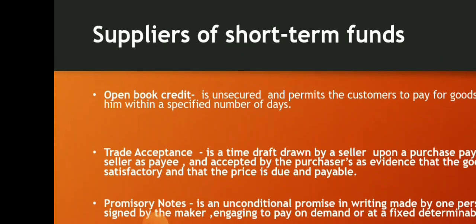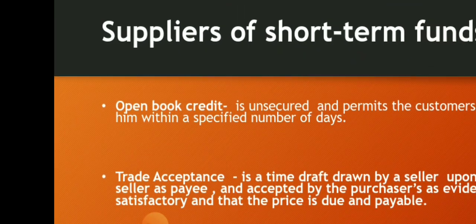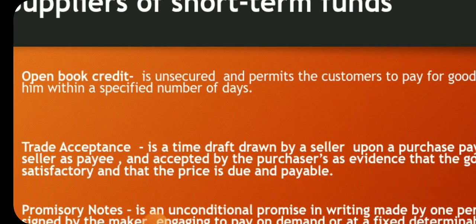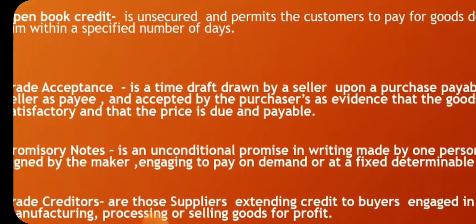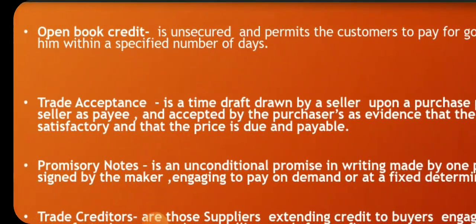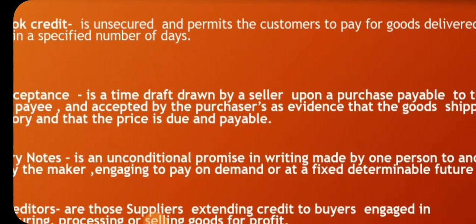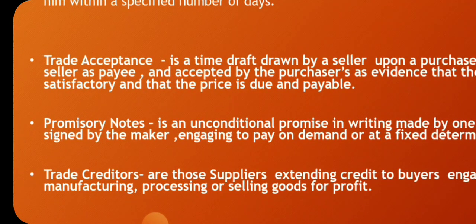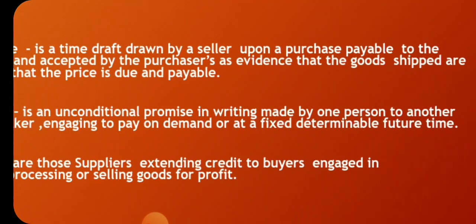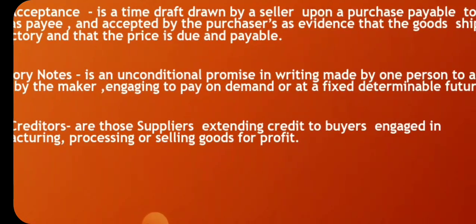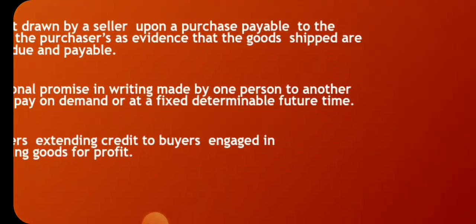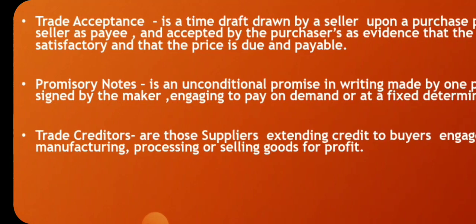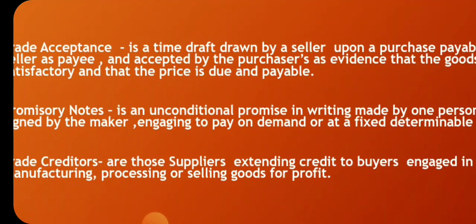Open book credit is an unsecured arrangement that permits customers to pay for goods delivered within a specified number of days. Trade acceptance is a time draft drawn by the seller upon the purchaser, payable to the seller, and accepted by the purchaser as evidence that the goods shipped are satisfactory and that the price is due and payable. Promissory note is an unconditional promise in writing made by one person to another, signed by the maker, engaging to pay on demand or at a fixed and determinable future time. Trade creditors are those suppliers extending credit to buyers engaged in manufacturing, processing, or selling goods for profit.